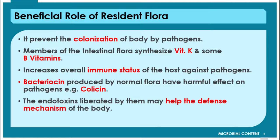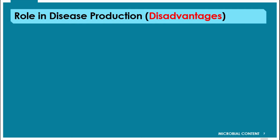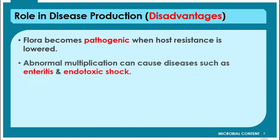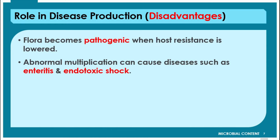Now let us see the harmful role of normal flora in disease production. The flora becomes pathogenic when the host's resistance is lowered. Although normal flora is beneficial, when the resistance power of the host is reduced, they may become pathogenic and cause infection. Secondly, abnormal multiplication can cause disease, such as enteritis and endotoxic shock, if the organisms multiply beyond the appropriate number.